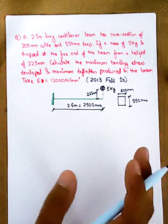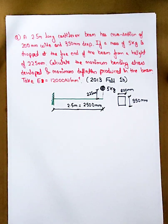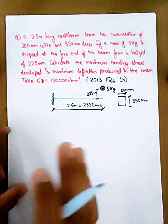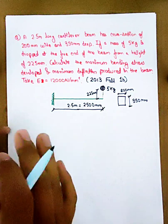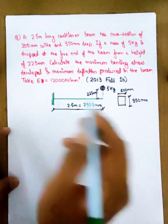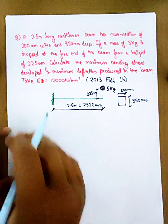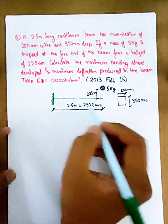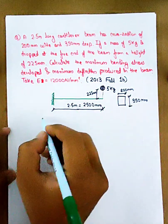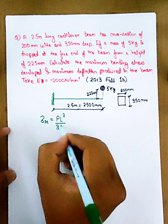We need to calculate the maximum bending stress developed and the maximum deflection produced. For a cantilever beam, the deflection formula is PL³ divided by 3EI.